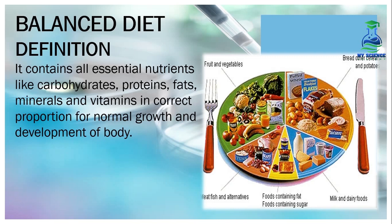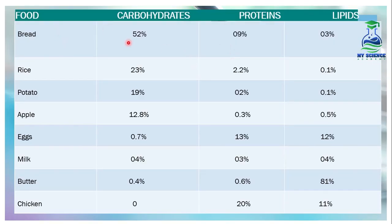In this chart, we will see some common foods and how many carbohydrates, proteins and lipids are present in them. Like bread has 52% carbohydrates, 9% proteins and 3% lipids.